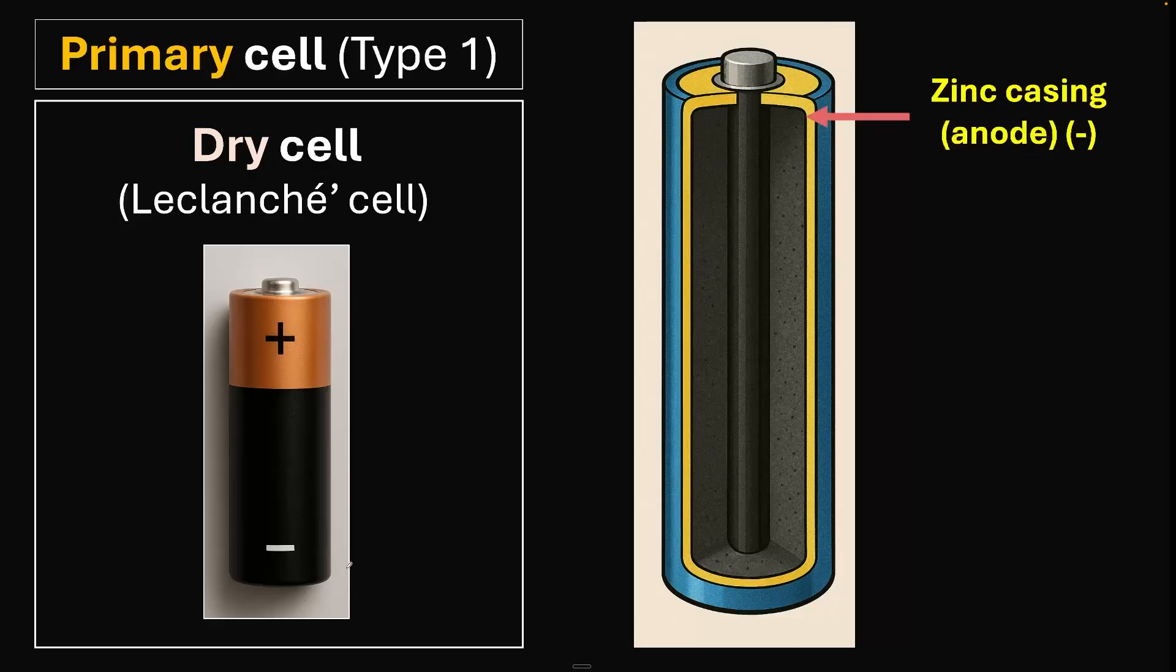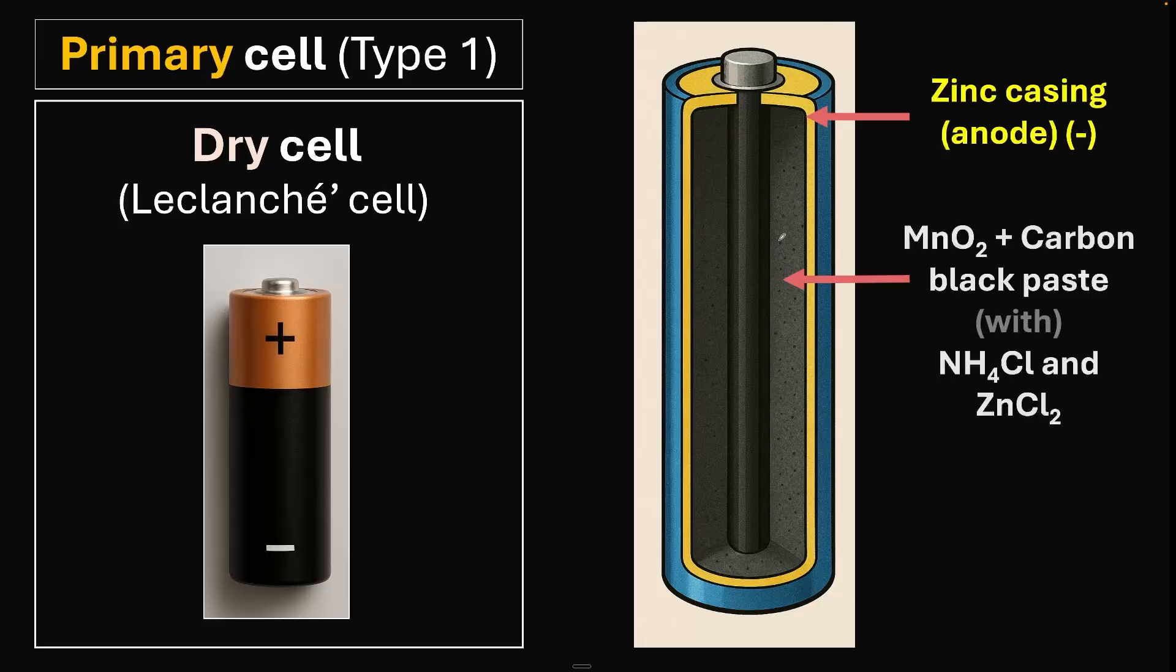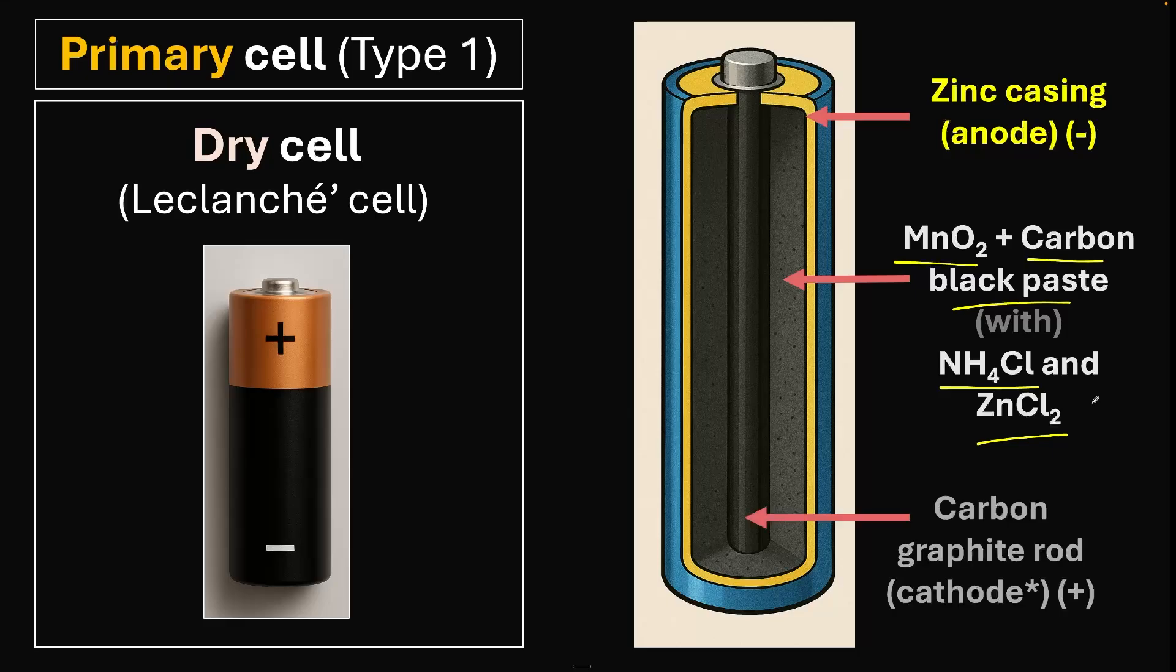Let's look at the parts. You have a zinc casing which forms the anode, the negative terminal. Inside is a paste of manganese dioxide and carbon black with ammonium chloride and zinc chloride, forming the electrolyte. You also have a carbon graphite rod which acts like a cathode, sort of. I'll explain why.